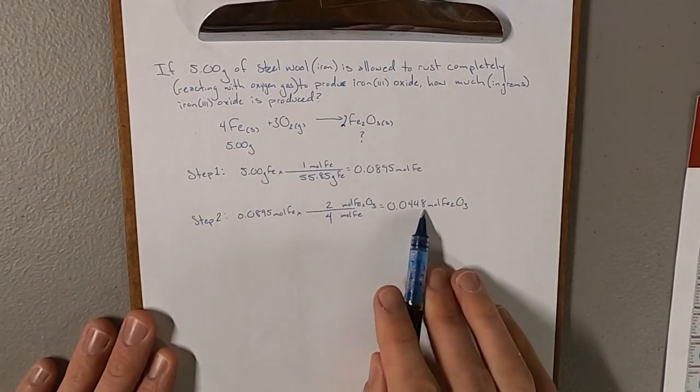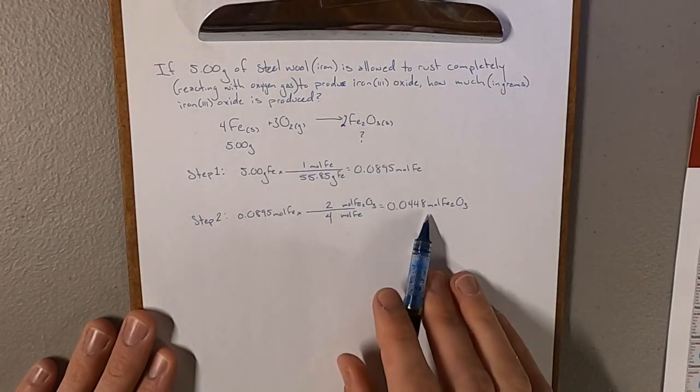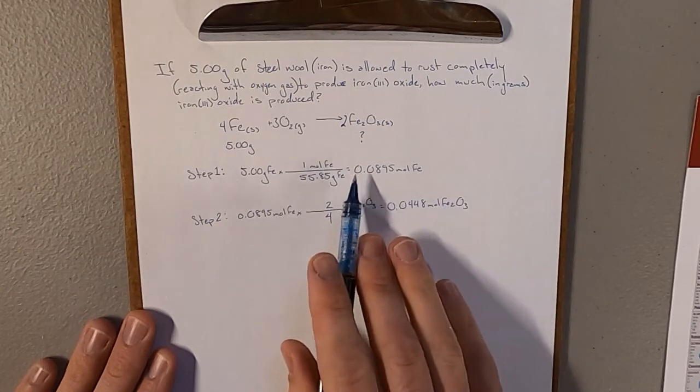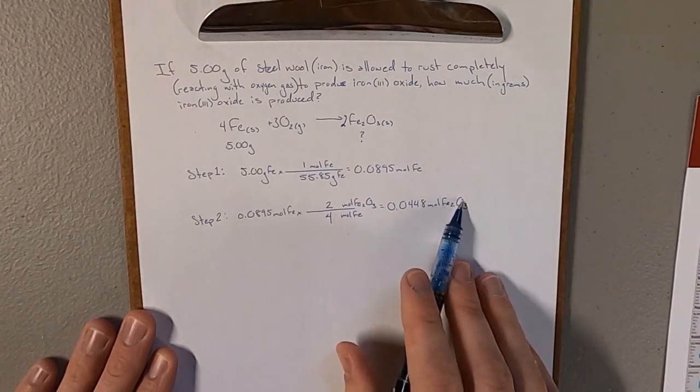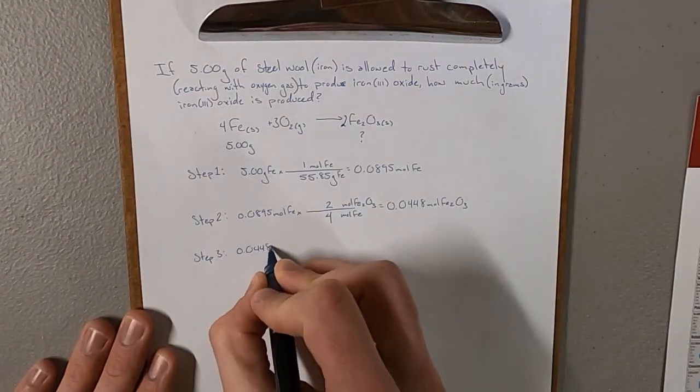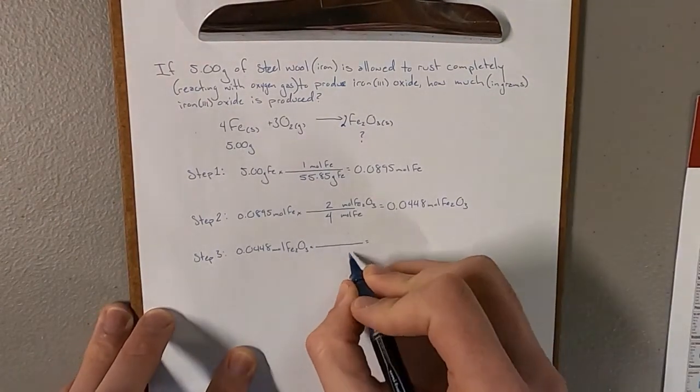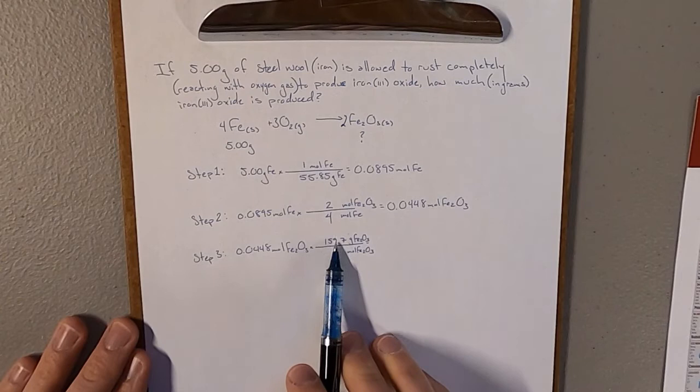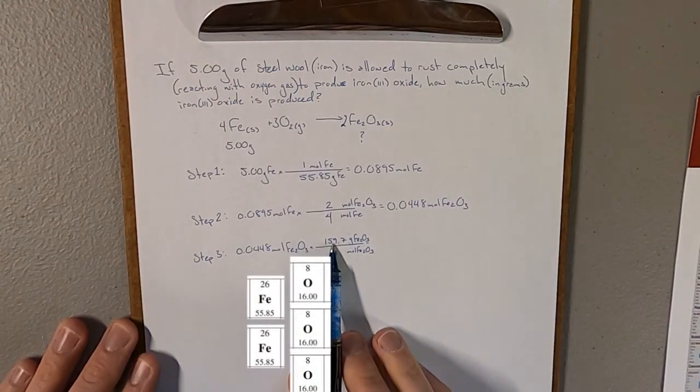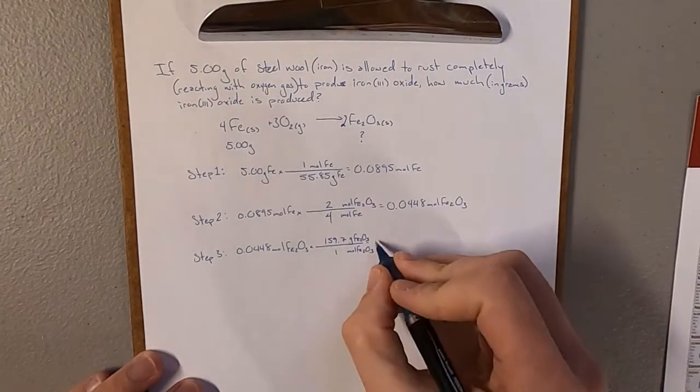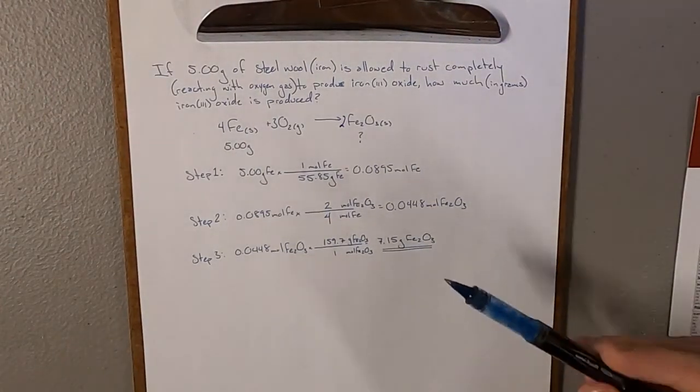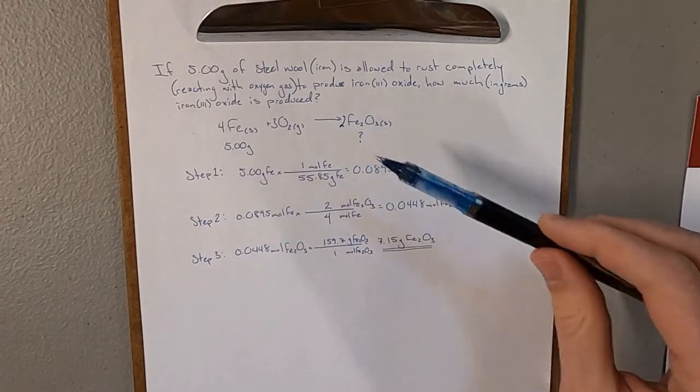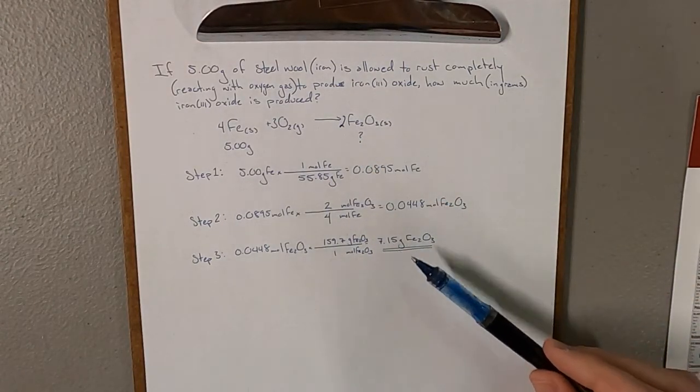Finally, step 3, so we're going to take now our moles of our desired substance and convert it into whatever units are being asked for, so grams in this case. And that's going to be using the molar mass, but not this molar mass, the molar mass of this substance with 2 irons and 3 oxygens. This is the molar mass of iron 3 oxide, it's 2 iron and 3 oxygen added together. So this is our final answer, it's an answer to the question if you had 5 grams of steel wool and you let it completely rust, it would become 7.15 grams of rust of iron 3 oxide.